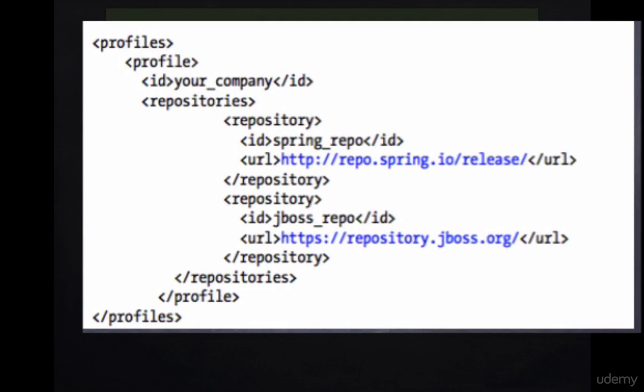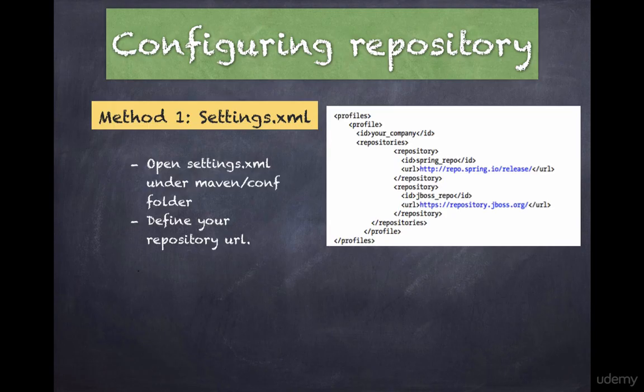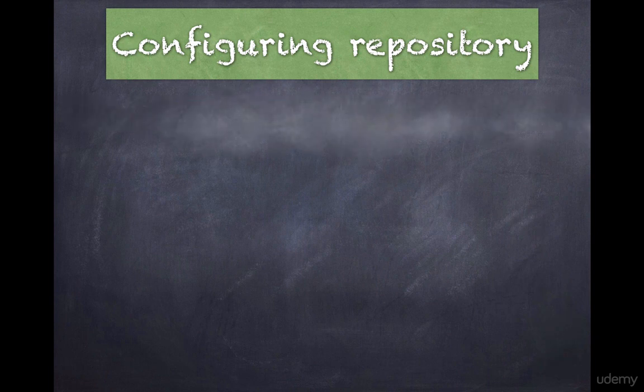In the same way, you can also add a company repository manager. There are two main parts to the repository tag. First is the ID, which can be any ID of your choice — for example, spring-repository or jboss-repository. The second part is the URL, which is the public or private URL where your artifacts or JAR files will be downloaded from.